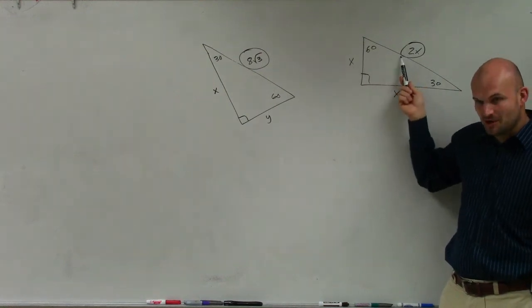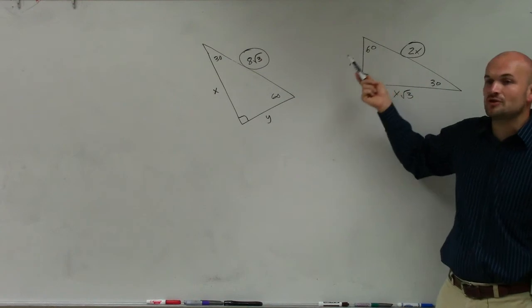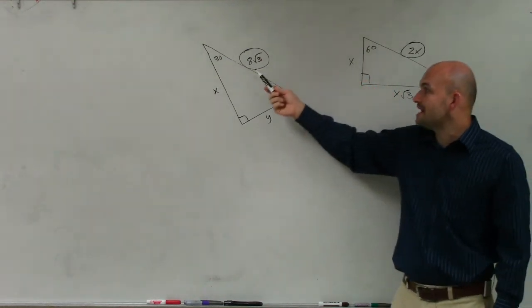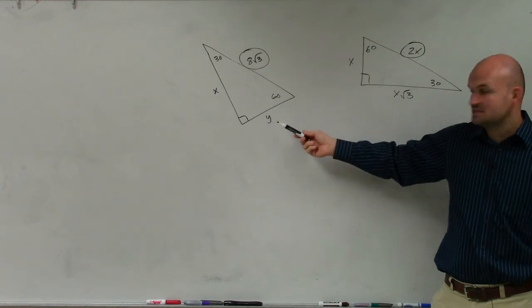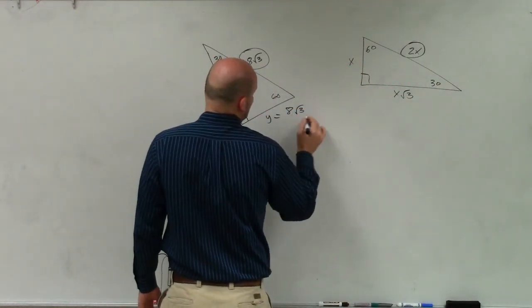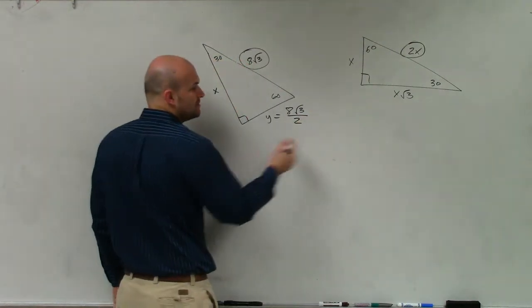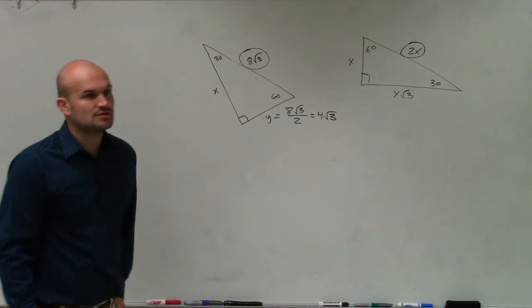So short leg to hypotenuse, you multiply by 2. Hypotenuse to short leg, you divide by 2. This is hypotenuse to short leg, so you're going to divide by 2. So all we do is 8 square root of 3 divided by 2. So that answer is 4 square root of 3.